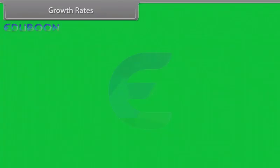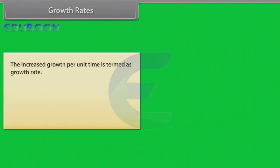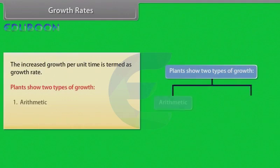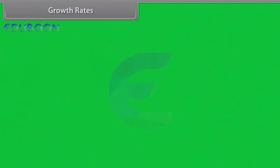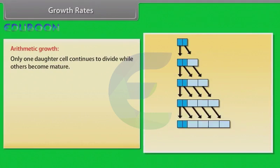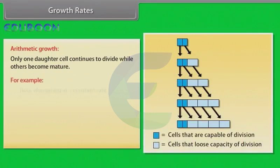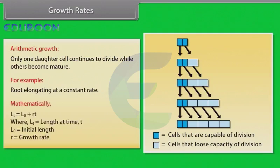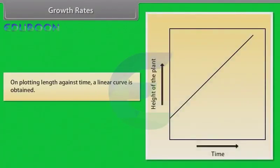Growth Rates: The increased growth per unit time is termed as growth rate. Plants show two types of growth: arithmetic and geometric. Arithmetic growth — only one daughter cell continues to divide while others become mature. For example, root elongating at a constant rate. Mathematically, Lt = L0 + Rt, where Lt is length at time t, L0 is initial length, and R is growth rate. On plotting length against time, a linear curve is obtained.